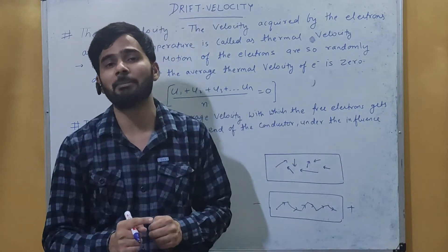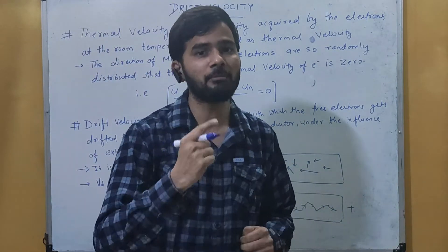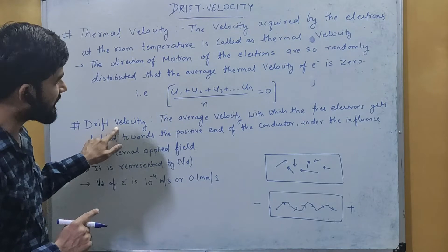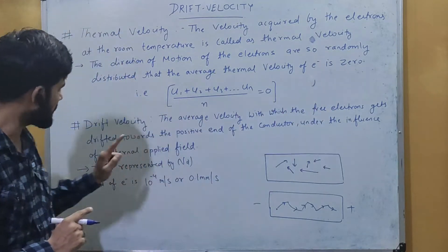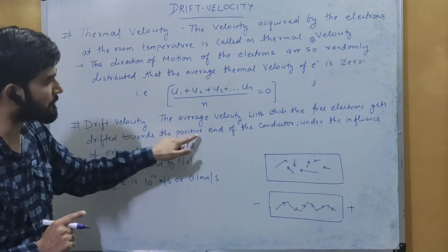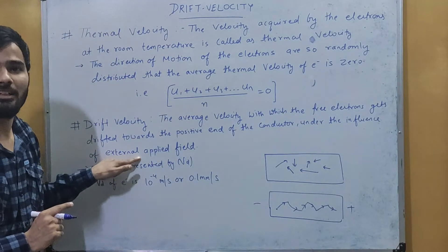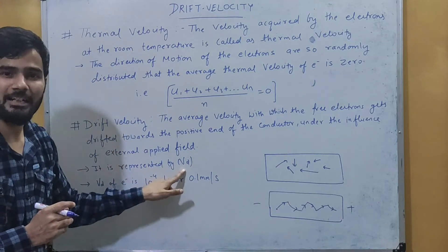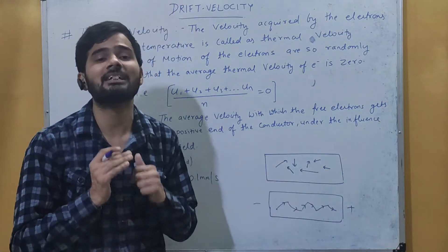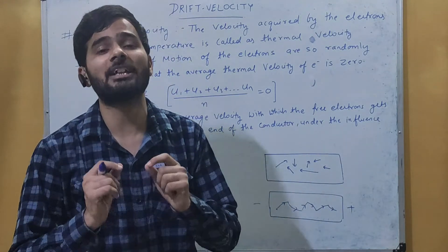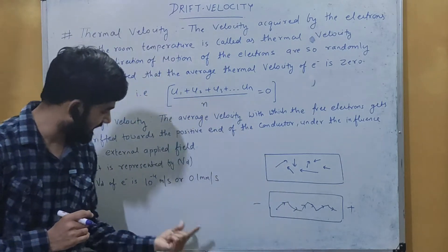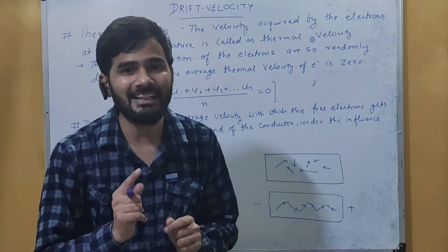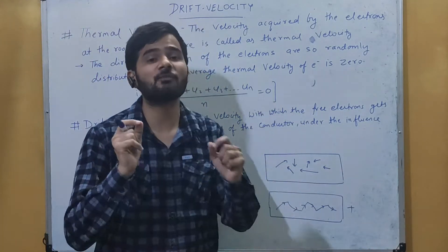If no potential is applied, the velocity acquired by electrons is called thermal velocity. If we apply an electric field, the motion or velocity of the electron is called drift velocity. The drift velocity is the average velocity with which free electrons drift towards the positive end of the conductor under the influence of an externally applied field. It is represented by vd, and its actual value for electrons is equal to 10 to the power minus 4 meters per second, which is also equal to 0.1 millimeters per second.